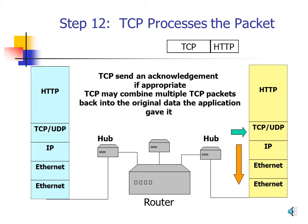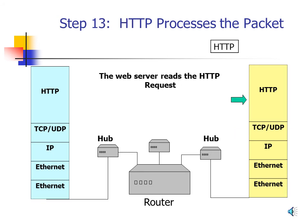TCP then checks for packet segmentation. If the original data had been segmented into multiple TCP packets, the receiving TCP station waits for all segments, recombines them into the original data, and passes it to the upper-layer protocol. Step 13: HTTP Processes the Packet. TCP hands the HTTP packet up to the web server. The web server looks at the packet, recognizes it as a GET request for its home page, and prepares to create a response.